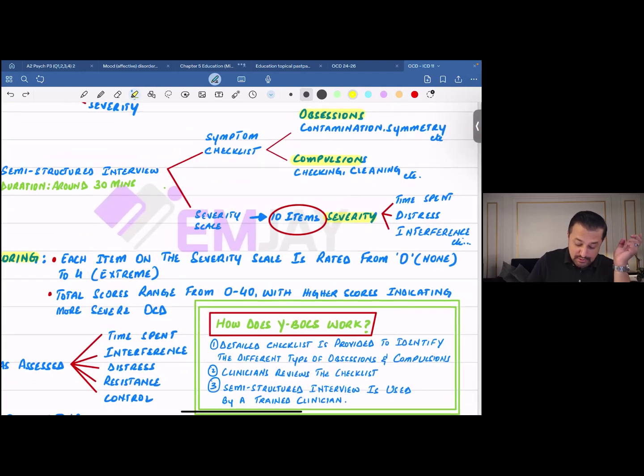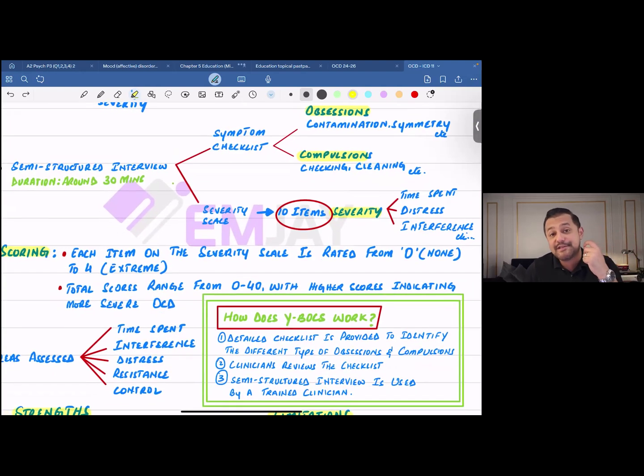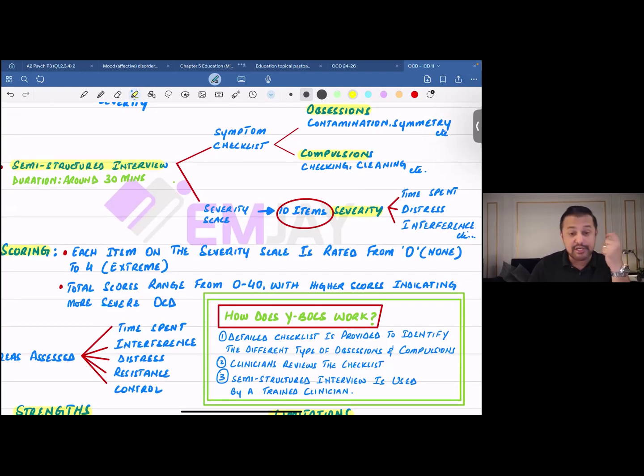About the Yale Brown obsessive-compulsive scale, it is an example of a semi-structured interview. It is an interview that takes about 30 minutes, which is a lot more time than the typical MOCI was taking. There are certain things considered better when it comes to YBOCS, and certain things considered better when it comes to the MOCI.